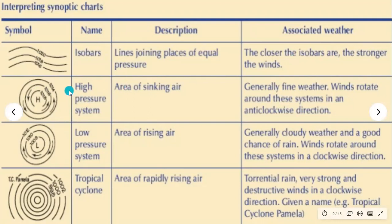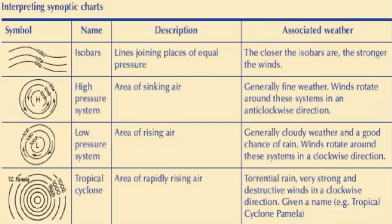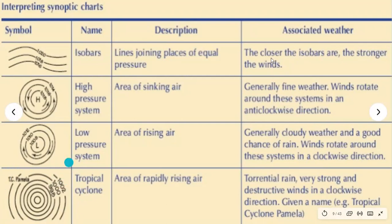A high pressure system is an area of sinking air; the associated weather is generally fine, and winds rotate in an anti-clockwise direction. Low pressure is an area of rising air; the associated weather is generally cloudy with a good chance of rain, and winds rotate in a clockwise direction. A tropical cyclone is also a low pressure system — an area of rapidly rising air, with torrential rain and very strong, destructive winds in a clockwise direction.